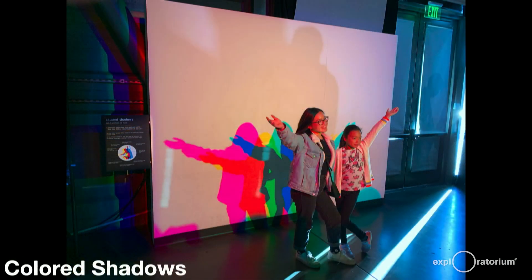Of course, everyone knows the colored shadow wall. Lit by red, green, and blue lamps, shadows in cyan, magenta, and yellow appear.